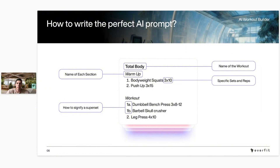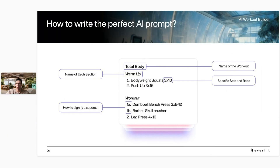Sections can be something like a warm-up. If you want the AI to pick up on that, you just need a subtitle — you can even write the word 'section' and then type the name 'warm-up.' Then just the exercise name and sets and reps. For example, bodyweight squats 3x10, push-ups 3x15 — something as simple as that. The AI will pick up on it, put the exercise in, and fill in the correct sets, reps, and weight.